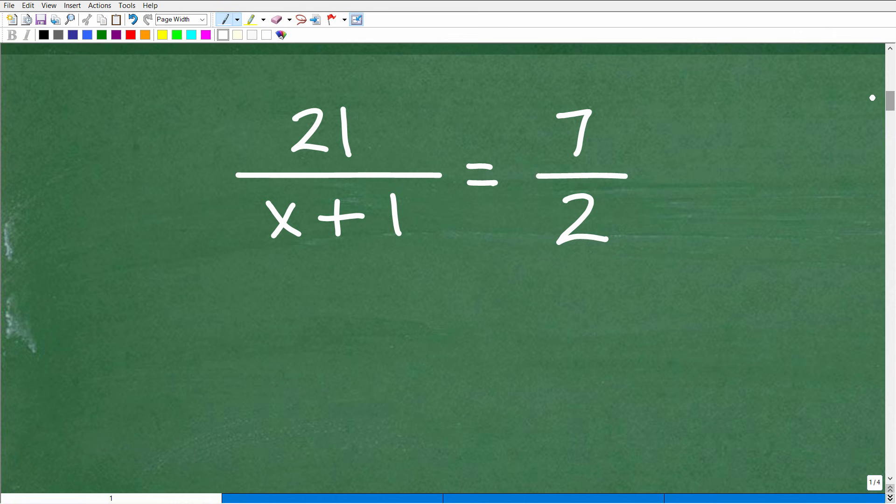Okay, so here again is our problem. We have 21 over x plus 1 is equal to 7 halves. Now, I'm saying that this is a proportion. Now, why is this a proportion? Well, if we look here, we have a fraction bar and a fraction bar. Effectively, this is an equation where we have one fraction is equal to another fraction. Anytime in mathematics you see one fraction equal to another fraction, you're dealing with something called a proportion.